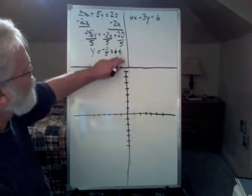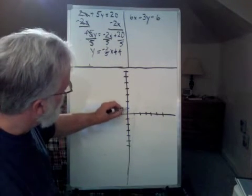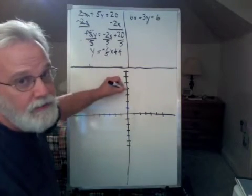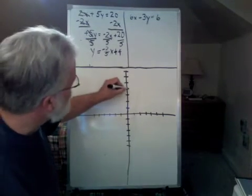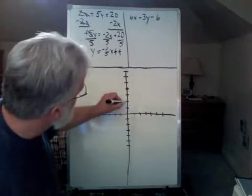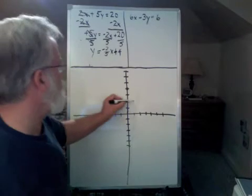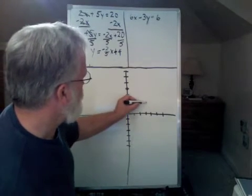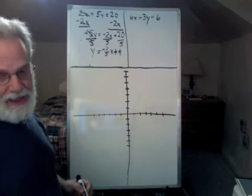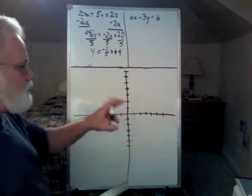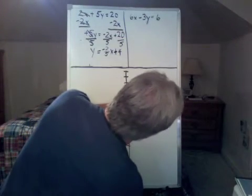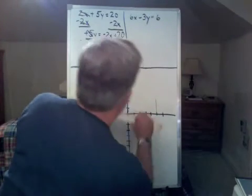My y-intercept is plus 4. So, I go up 1, 2, 3, 4 on the graph. Like that. Nice and big so you can see it. And then I go down 2 and over 5. 1, 2, 3, 4, 5. And I appear to be on the proper line. And if you have graph paper, it's easier because you make little marks on the graph paper. That will help you. So, yeah, that looks good.